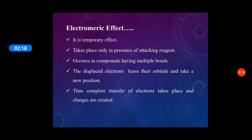Electromeric effect is a temporary effect. It takes place only in presence of attacking reagent. Remember, in inductive effect no attacking reagent is required, but in electromeric effect it takes place only in presence of attacking reagent. It occurs in compounds having multiple bonds — there may be double bond or triple bond between the atoms — and in such compounds, electromeric effect will be seen.